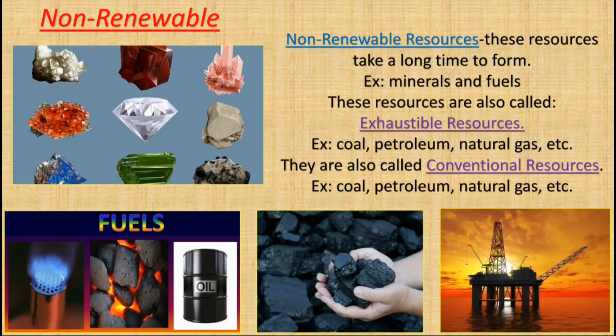These resources get depleted over time with increasing use. They are also called exhaustible resources — present in limited quantities and can be completely used up by human activities. Examples include coal, petroleum, and minerals like iron, copper, and aluminium. These are also called conventional resources, as they have been used for a long time, like fossil fuels.